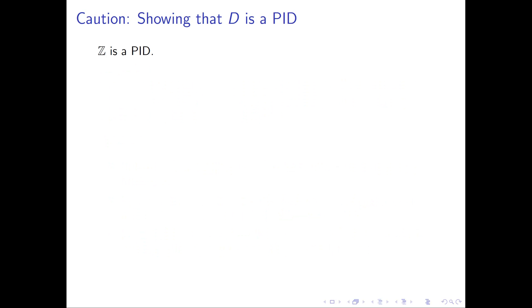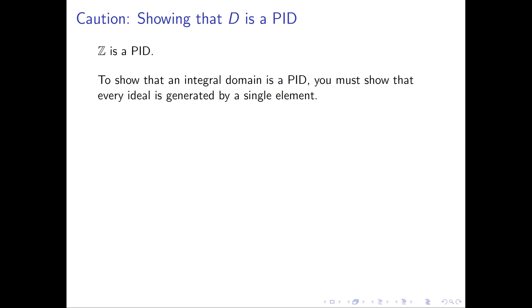What I'd like to do now is actually show very explicitly that the integers are a PID, and give a word of caution about how hard it can be to show that something is a PID. To show an integral domain is a PID, you need to start with an arbitrary ideal I and show that it's generated by a single element. When you think about ideals, you often think about easy ways to generate them, but you have to be aware that there are lots and lots of ways to build ideals, and you need to be prepared for all of those situations.